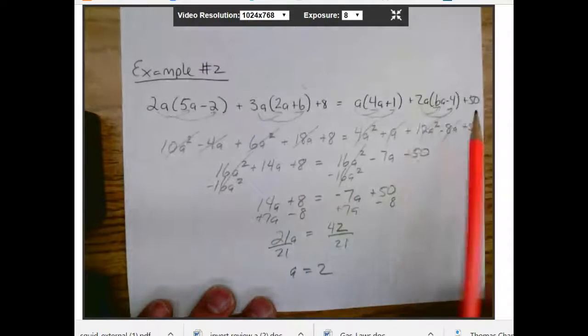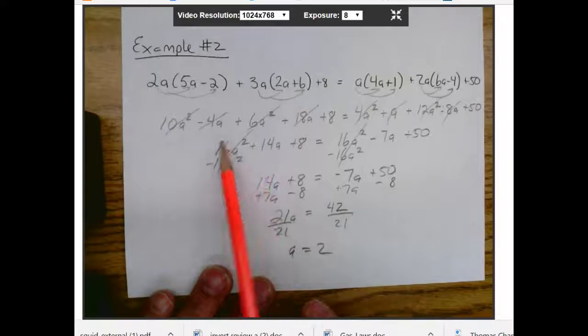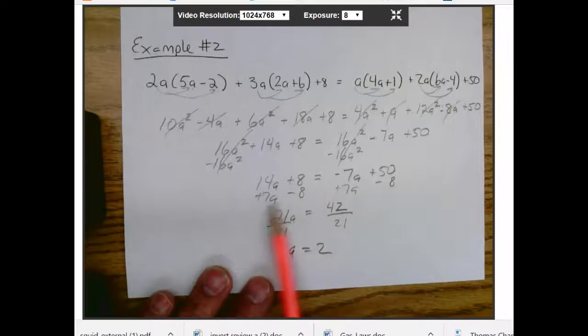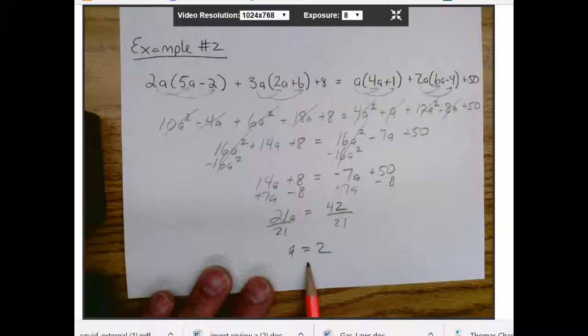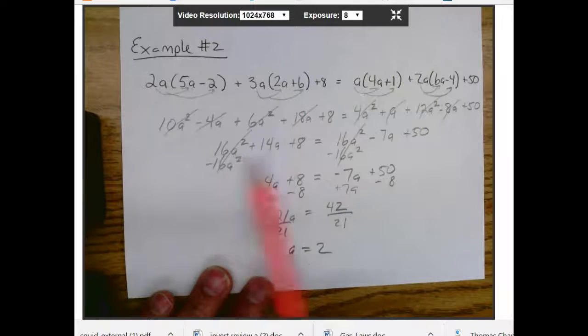First you do the distributive property. Then you collect your like terms. Then you use your algebra to solve for what a could be. Now if we have an a squared at the end, we'll have to do something different. We're not quite to that yet. But we'll learn how to do that pretty soon.